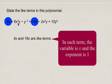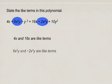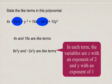If we consider the next term, 6x squared y — well, 6x squared y and negative 2x squared y are like terms because in each term the variables are x with an exponent of 2 and y with an exponent of 1.